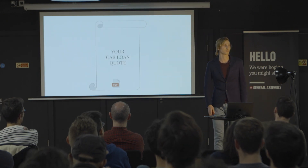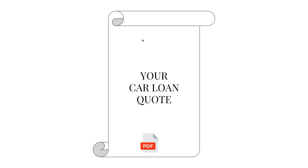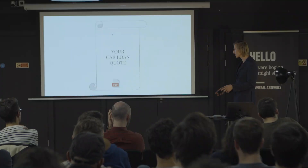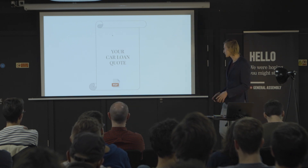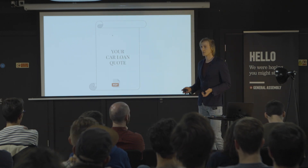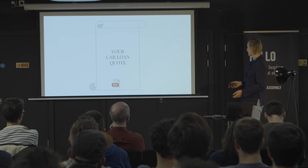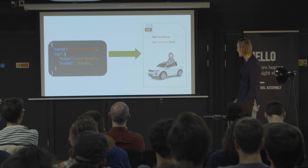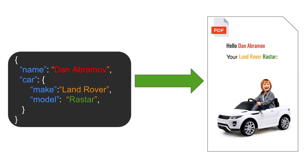A few months ago it got worse. I was asked to generate a personalized quote — so if somebody wants to buy a car and get a loan for it, I should generate a PDF for it. For example, if Dan Abramov wants to buy a Land Rover, I receive his name and car details and should display this beautiful PDF for him.